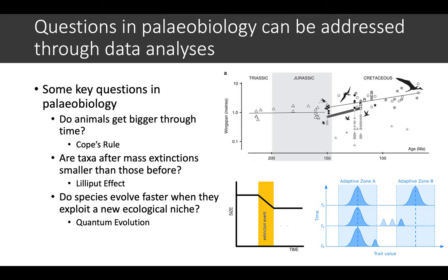And lastly, quantum evolution can be tested through phenotypic data. If you can assign them different adaptive zones, for instance if there's a transition, maybe the rate of evolution along that transition might be faster than the within-adaptive-zone evolution. These can be analyzed through data.